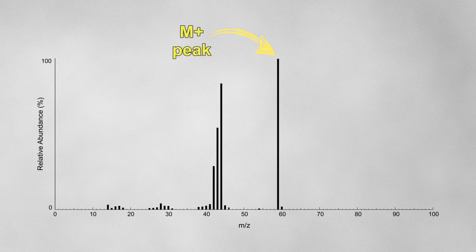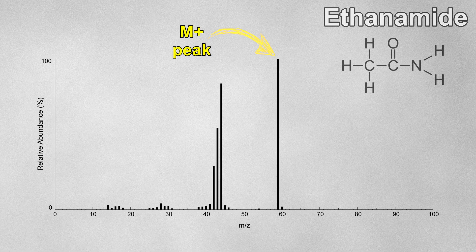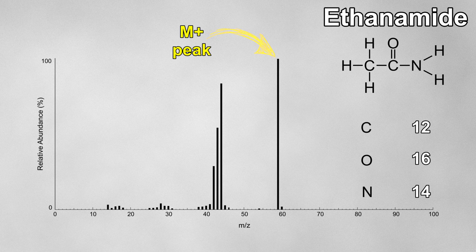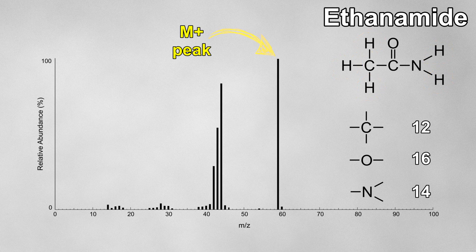Let's look at one last mass spectrum. Something different about the molecular ion peak compared to all the other spectra: the position of the molecular ion peak is at an odd m/z ratio, whereas all previous spectra had M+ peaks at even m/z ratios. An odd number indicates the presence of a nitrogen atom. This is because carbon, oxygen, and nitrogen all have even atomic masses; however, nitrogen is the only one of these three that forms an odd number of bonds — three to be precise. Hence, molecules containing a single nitrogen atom must also contain an odd number of hydrogen atoms, and since hydrogen has an odd mass number, the molecule will have an odd molecular mass.